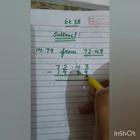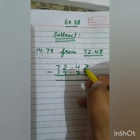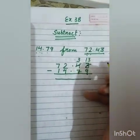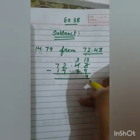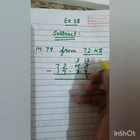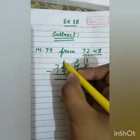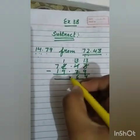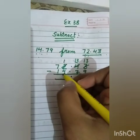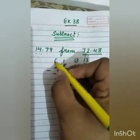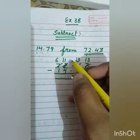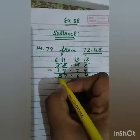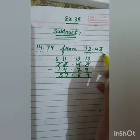Now 3 minus 9 is not possible, so it will take a borrow from 4. Now we have 13 minus 9, which is 4. Again, 3 minus 7 is not possible, so it will take a borrow. We have 13 minus 7, which is 6. Then 11 minus 4 is 7, and 6 minus 1 is 5.